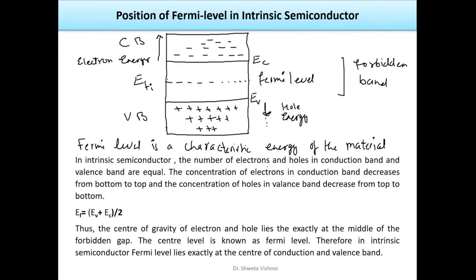In N-type semiconductor, we add donor impurities, so the number of electrons in the conduction band will be more than the number of holes. The center of gravity, and thus the Fermi Level, will shift towards the conduction band. In P-type semiconductor, we add acceptor impurities, so the number of holes will be more than the electrons, and the Fermi Level shifts towards the valence band. The more impurities we add, the more the Fermi Level will be shifted.